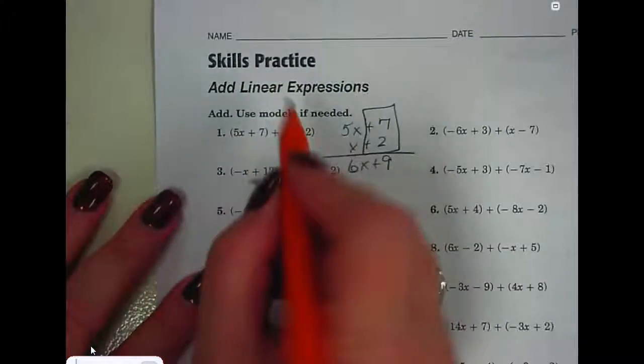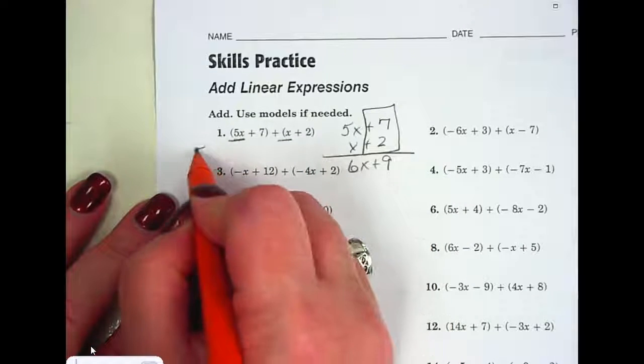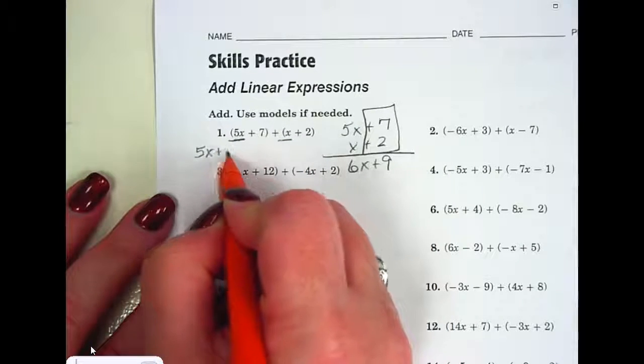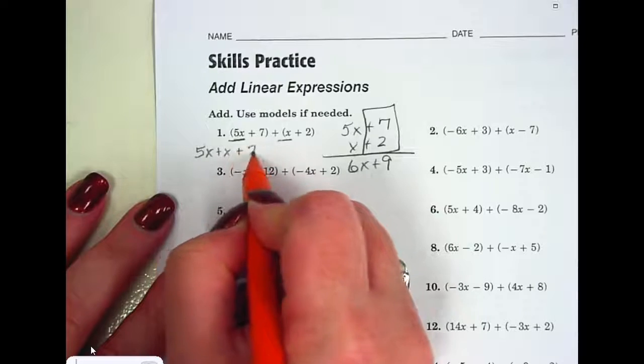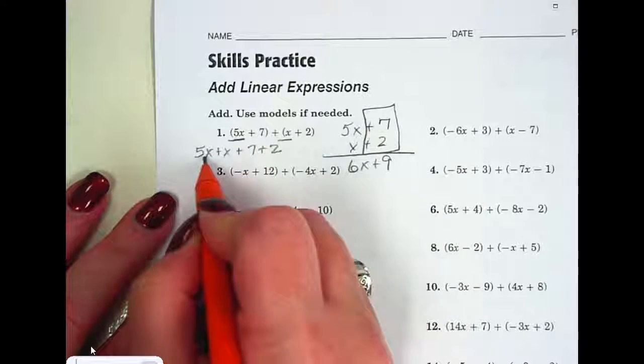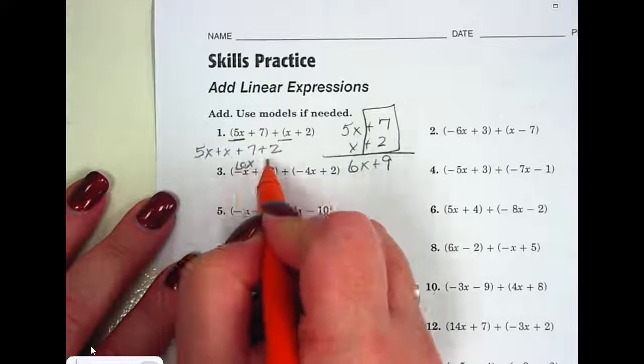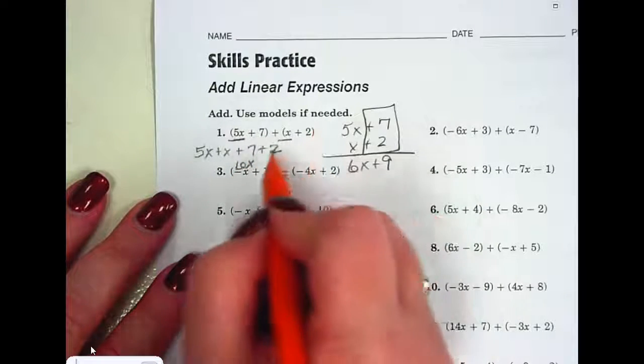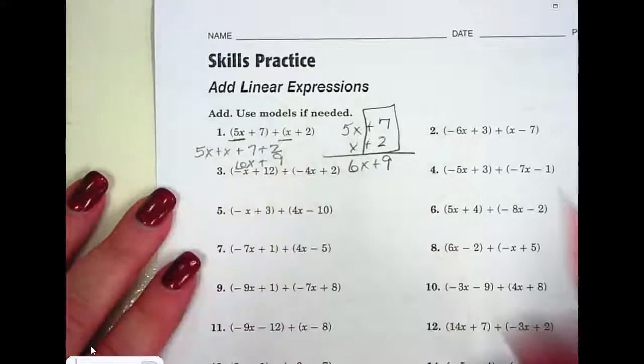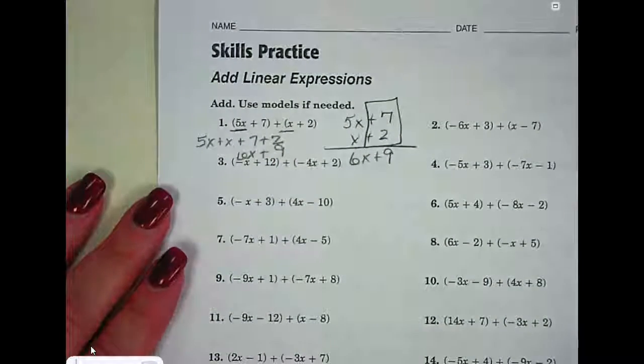The way I like to do it is I like to say 5x plus an x plus 7 plus 2. And then 5x plus x is 6x, and 7 plus 2 is 9. Either way you want to solve it, it's exactly the same.